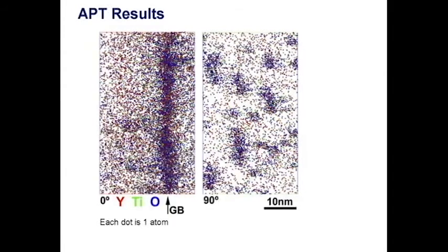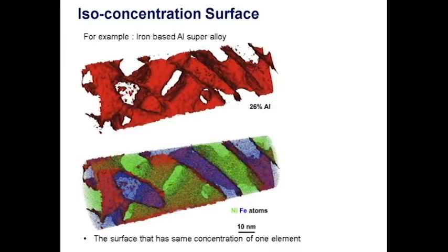For APT, there are two powerful techniques: iso-concentration surface and proximity histogram. Let's talk about them. The first image, red one, is iso-concentration surface.